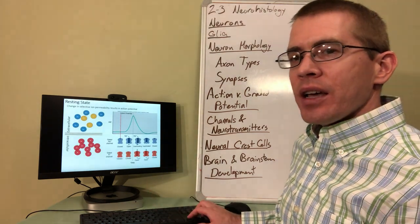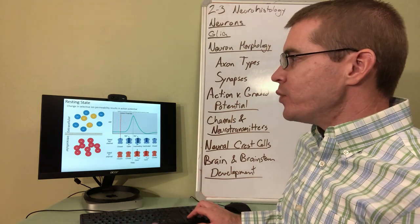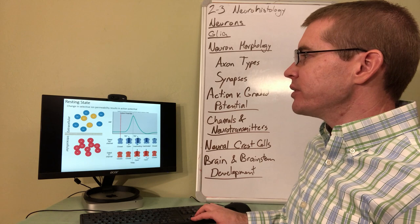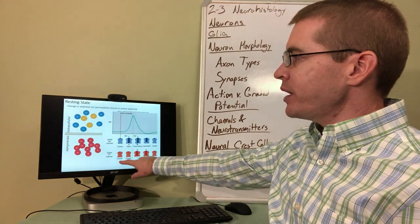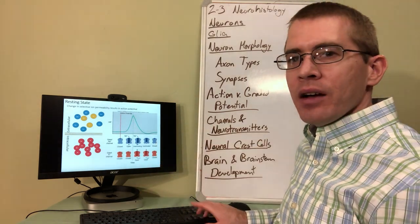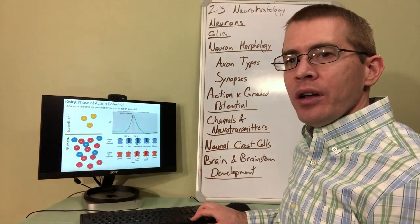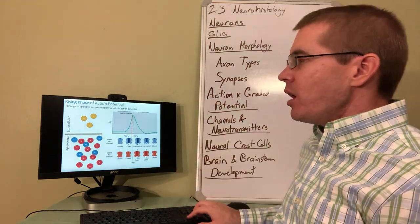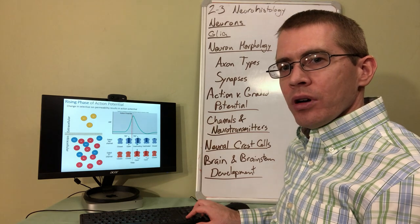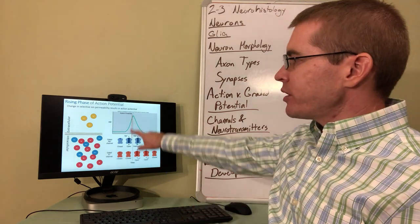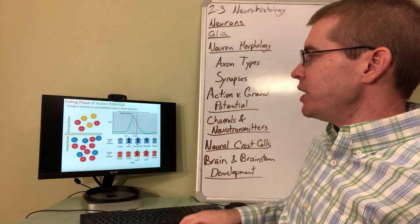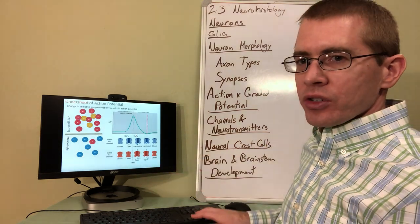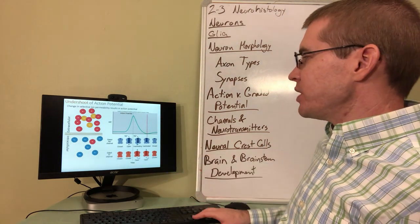The next few slides try to bring home this point visually, showing what's happening in the different phases. First is the resting state of the neuron. Next we go to the rising portion of the action potential wave, where sodium channels open and sodium rushes in. Then we hit the peak, the potassium channels open, and potassium rushes out.